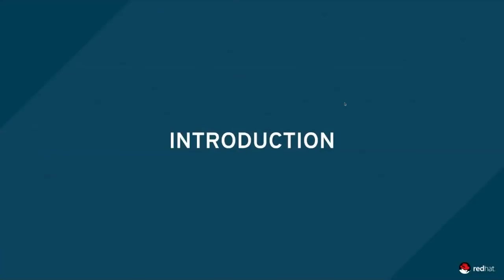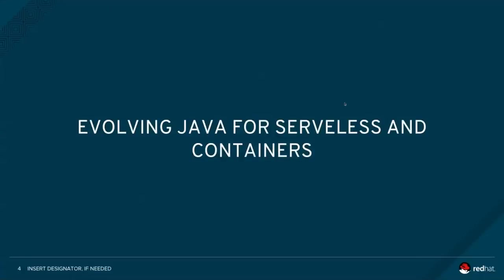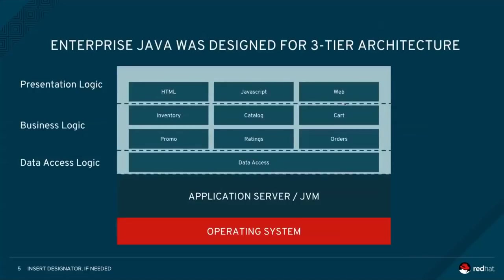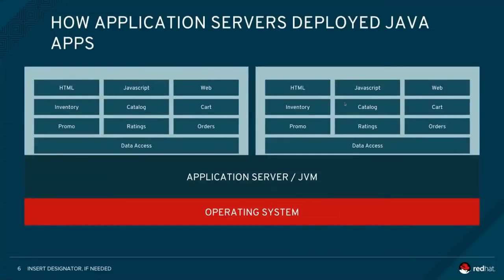We wanted to start by introducing the problem that Quarkus is looking to solve. Quarkus is looking at evolving Java for serverless and container workloads. One of the problems is that not only Java, but a lot of Java enterprise applications were originally designed for a three-tier type of application, deployed on a single operating system, taking over basically all the memory of the machine.